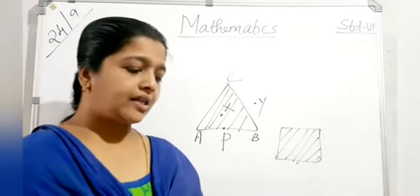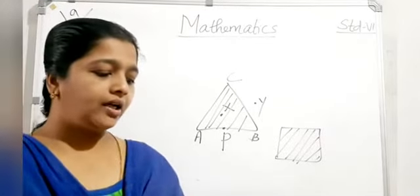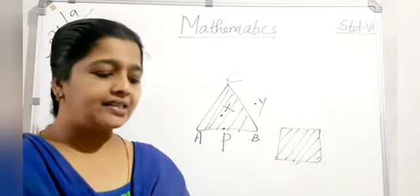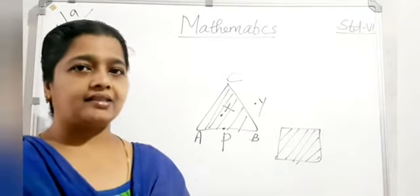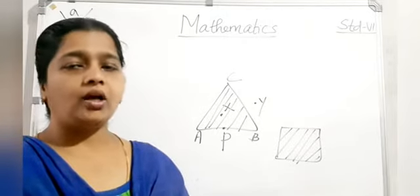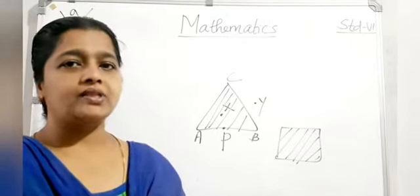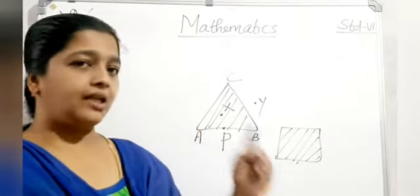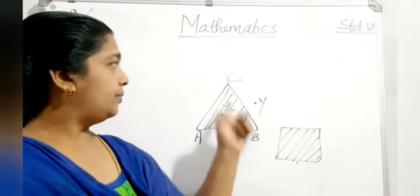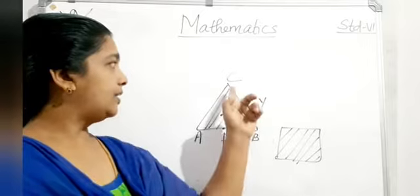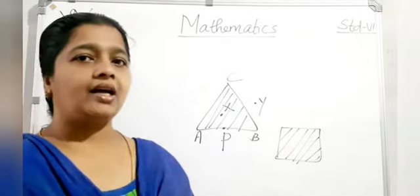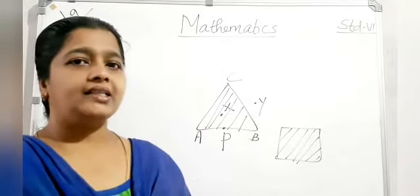The line segments are the sides of the polygon. Any two sides with a common endpoint are called adjacent sides. The meeting point of a pair of sides is called the vertex. For triangle ABC: AB and BC, BC and CA, CA and AB are the adjacent sides.